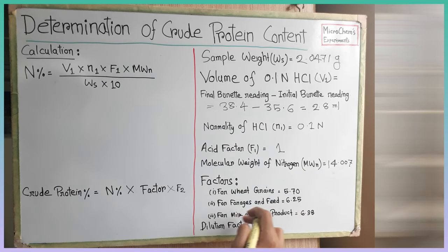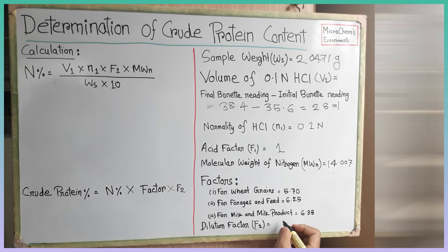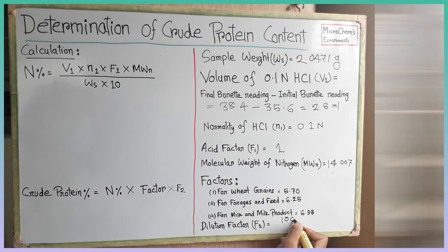So here are some factors based on the sample type provided by this method. We used 10 milliliters for the distillation from the total 100 milliliters digested juice. That's why the dilution factor F2 is 10.